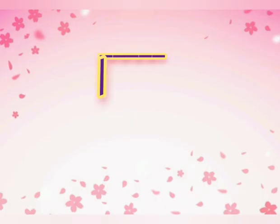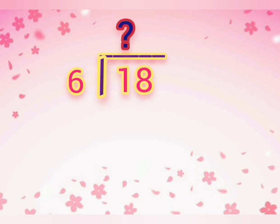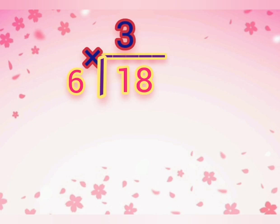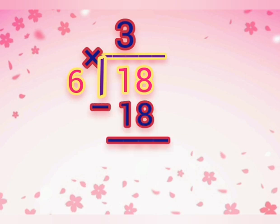In another way, we divide 18 over 6. So we should ask ourselves, what is the number that I multiply by 6 to give me 18 or less than it? It's 3. 3 times 6 is equal to 18. Now we will subtract 18 minus 18 is equal to 0.